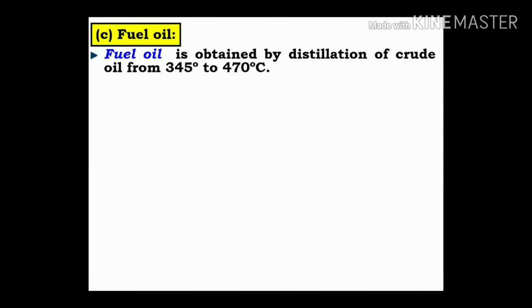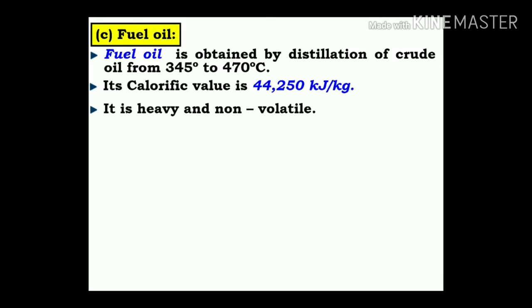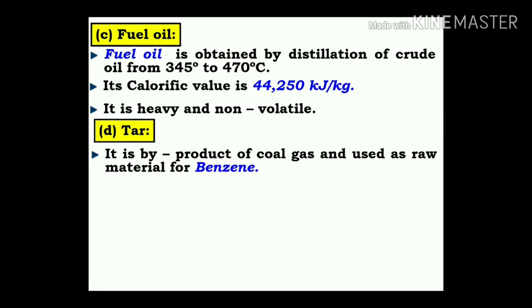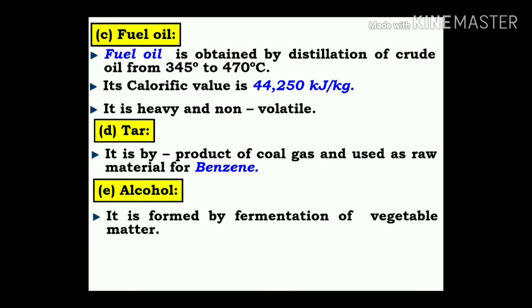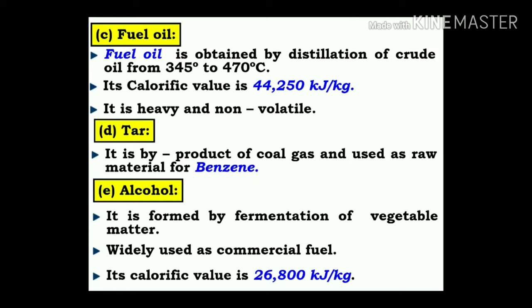Fuel oil is obtained by distillation of crude oil from 345°C to 470°C. Its calorific value is 44,250 kJ/kg. It is heavy and non-volatile. Tar is a by-product of coal gas and is used as a raw material for benzene. Alcohol is formed by fermentation of vegetable matter and is widely used as a commercial fuel. Its calorific value is around 26,800 kJ/kg.